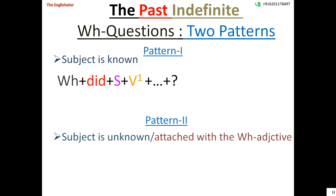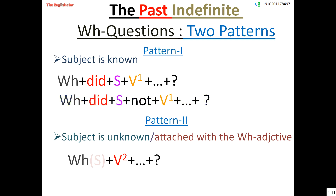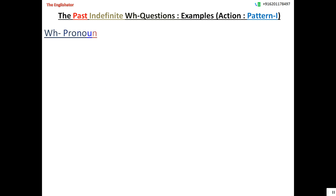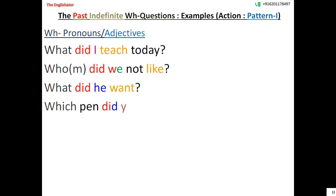In Pattern 2, where the subject is not separately available or is attached to the WH word itself, the WH word acts as the subject and we use the V2 form of the main verb, plus additional words, plus a question mark. However, if we want to make negative questions in Pattern 2, we must use did + not + V1.